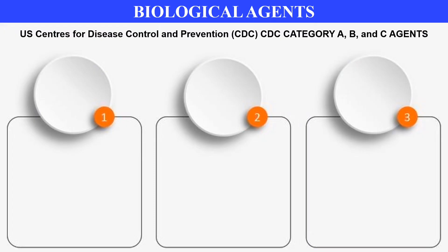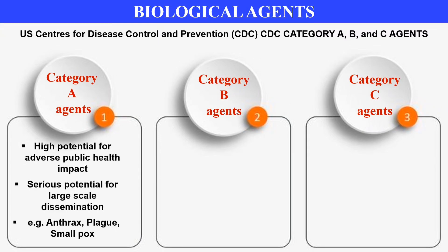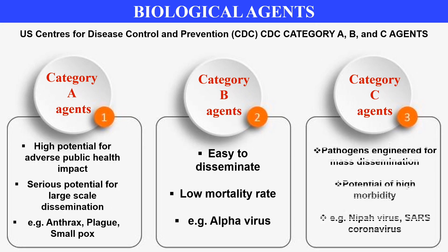According to the US Centers for Disease Control and Prevention, biological agents are divided into three categories: A, B, and C. Category A agents have a high adverse effect on public health and can cause serious damage — examples include anthrax and plague. Category B agents are easy to disseminate but have a low mortality rate — examples include alphaviruses. Category C includes engineered pathogens with a high death rate, such as Nipah virus and SARS coronavirus.